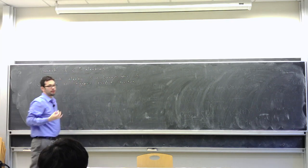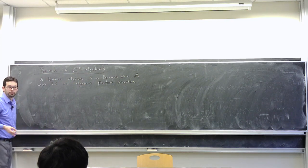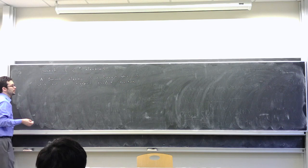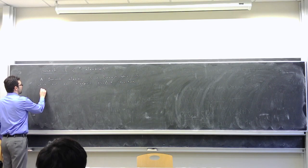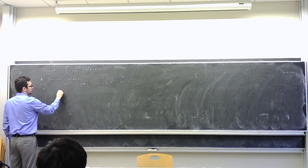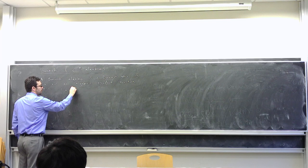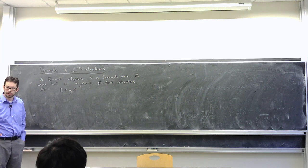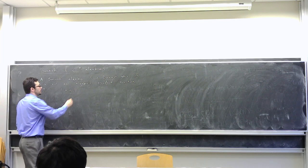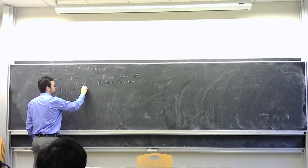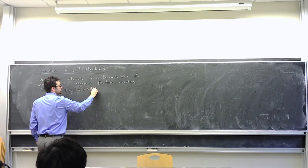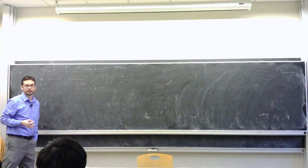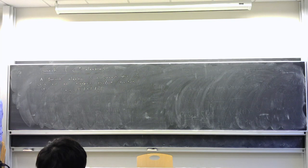We want the norm to be compatible with the algebra structure, so we require that the norm of the product of two elements is at most the product of their norms — that is, less than or equal to the product of the norms. That's a Banach algebra.